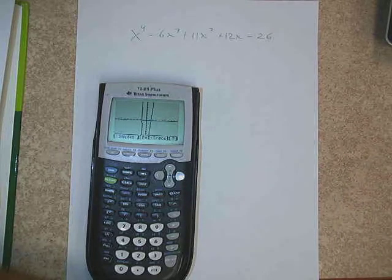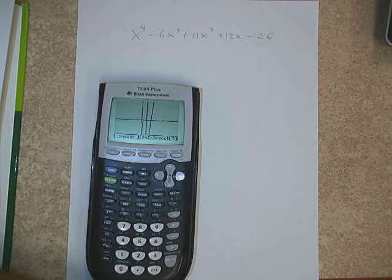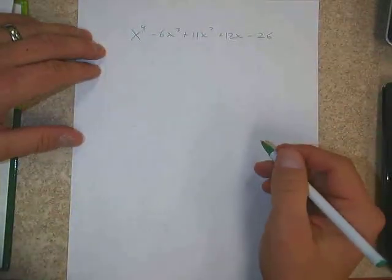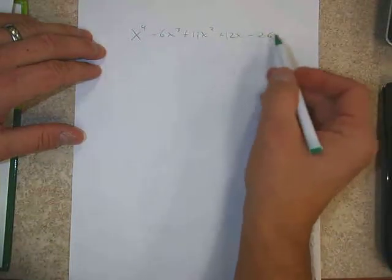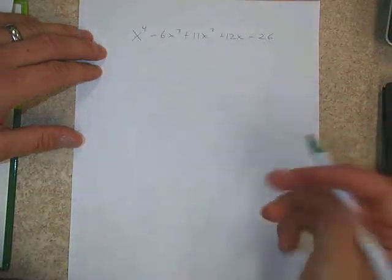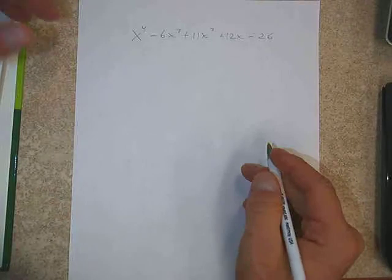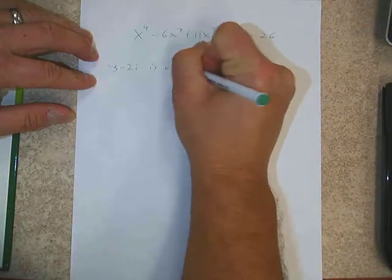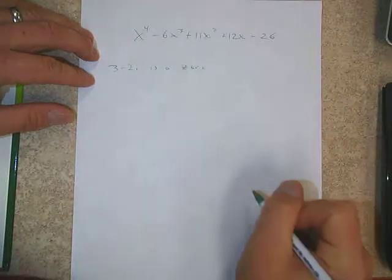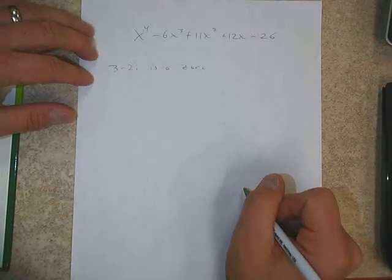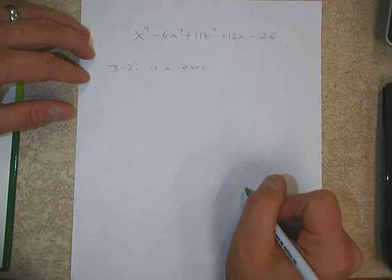So how in the world would we start dividing if we already know that everything on the list is not going to work? If we can't find something to divide into that, we're going to be out of luck. So as I mentioned, one thing we would have to know is that they would have to give us a little more information.